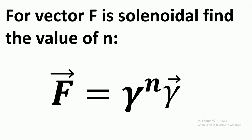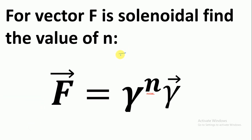In this question, a vector F is given whose value equals r to the power n multiplied by vector r. It is also given that vector F is a solenoidal vector. A solenoidal vector means that if you take the divergence of that vector field, it comes to zero. So the only information given is that the vector field F is solenoidal.